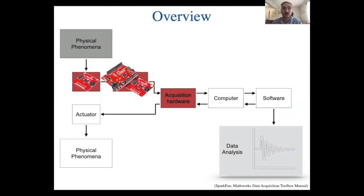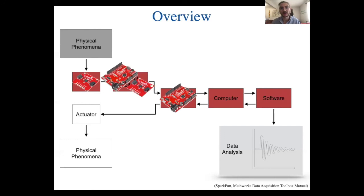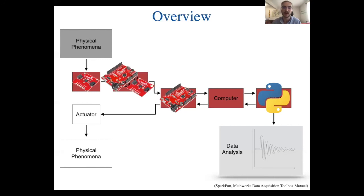The acquisition hardware needs to perform the digitization — converting the analog signal to a digital signal — by sampling with a certain sampling frequency and a given resolution. In our course the acquisition hardware will be our microcontroller. From there we can store the data on our computer and post-analyze it in Python. In many cases the signal will still be too noisy at this point, so we may also have to do some signal conditioning in Python — signal conditioning can happen at many different stages of the data acquisition process.